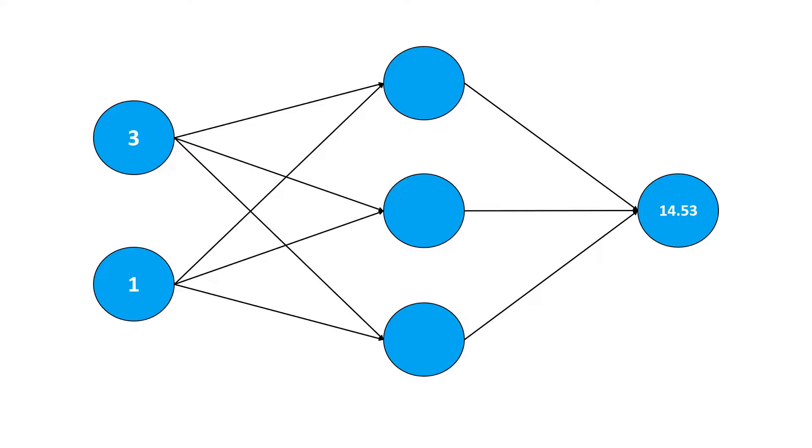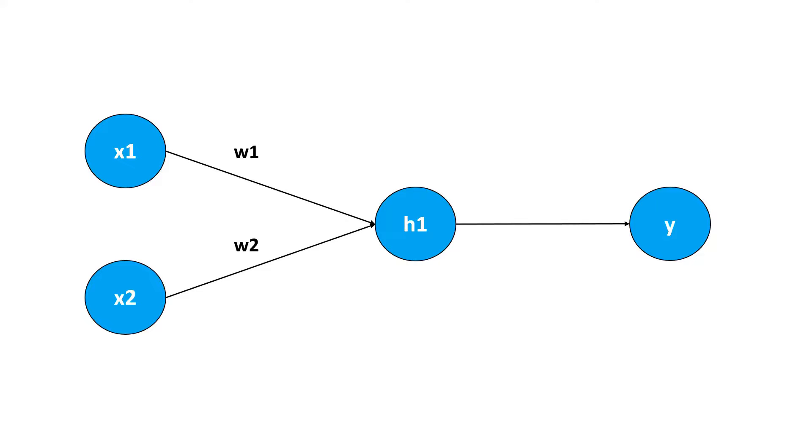But before we start to go more into detail for this net, let's start with a simpler one. This neural net only has two input nodes, one hidden layer consisting of one hidden node, and one output node.